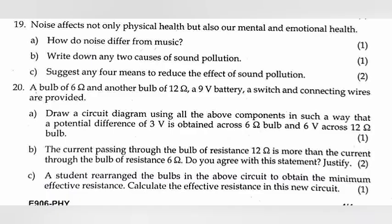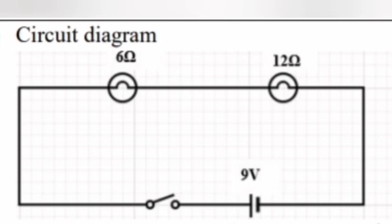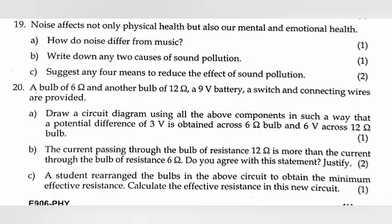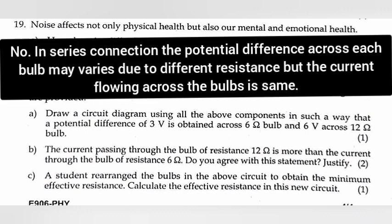Question 20: A bulb of 6 Ohm and another bulb of 12 Ohm, a 9 Volt battery, a switch and connecting wires are provided. A: Draw a circuit diagram using all the above components in such a way that a potential difference of 3 Volt is obtained across 6 Ohm bulb and 6 Volt across 12 Ohm bulb. Answer: A circuit diagram. B: The current passing through the bulb of resistance 12 Ohm is more than the current through the bulb of resistance 6 Ohm. Do you agree with this statement? Justify. Answer: No. In series connection, the potential difference across each bulb may vary due to different resistance but the current flowing across bulbs is same.